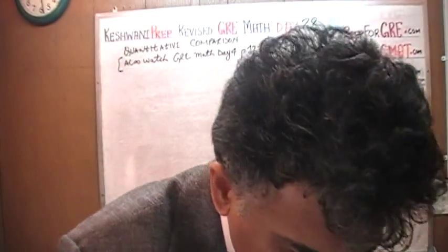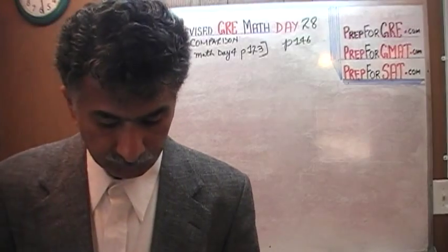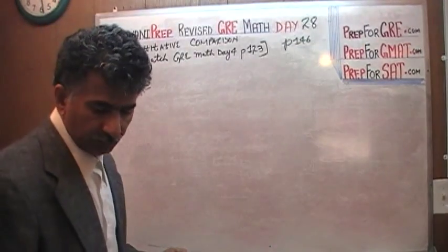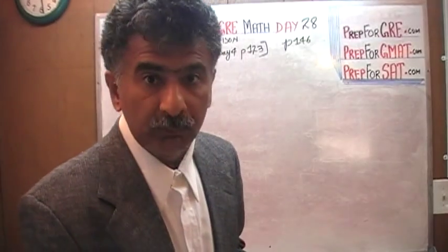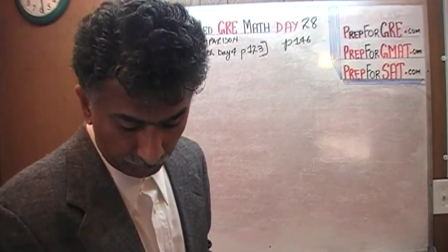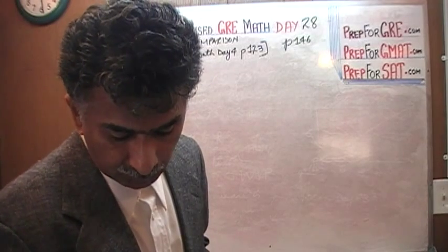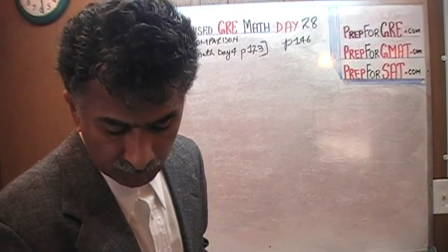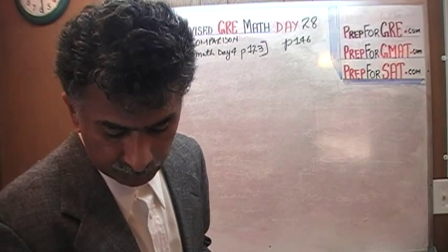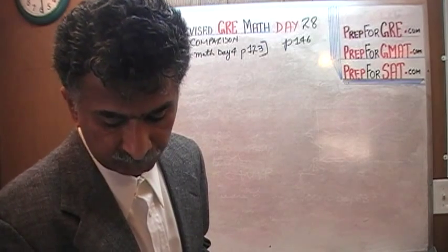So here is a similar problem — not the exact one in front of us, but a similar one. I am going to read the problem to you; follow along in your book. I am going to make some changes. It says: in year 2009, the property tax on each home in town X was P% of the assessed value of the home.